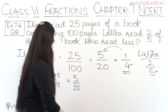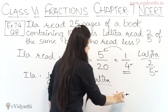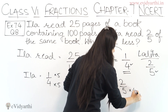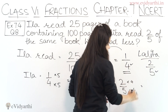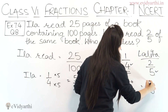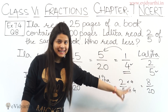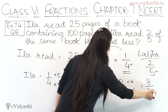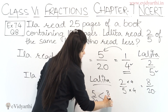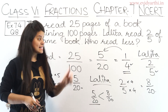Now we find Lalitha's equivalent fraction. Her fraction is 2 upon 5. To get denominator 20, we multiply by 4: denominator 5 into 4 is 20, and numerator 2 into 4 is 8. So Lalitha's fraction is 8 upon 20. Comparing 5 upon 20 and 8 upon 20 — since the denominators are the same, we compare numerators: 5 upon 20 is less than 8 upon 20, which means Ella has read less of the book compared to Lalitha.